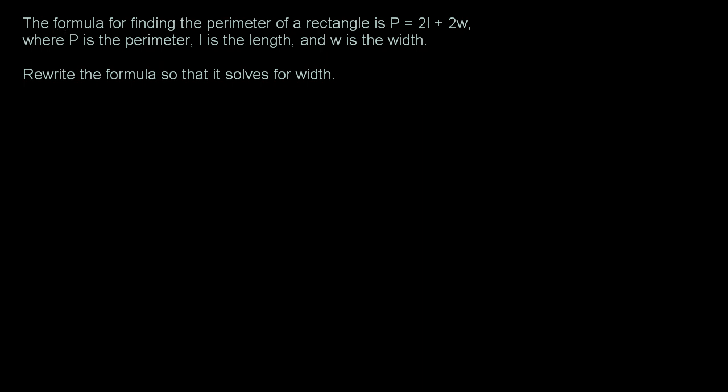We are told that the formula for finding the perimeter of a rectangle is P equals 2l plus 2w, where P is the perimeter, l is the length, and w is the width.